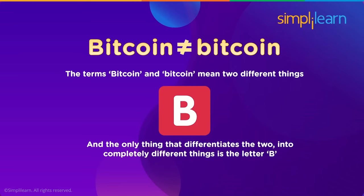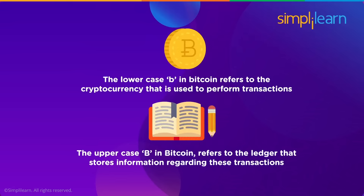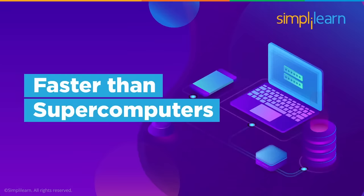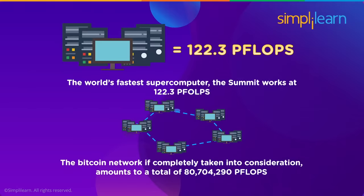The power of B: Bitcoin with an uppercase B and bitcoin with a lowercase b mean two different things. The lowercase 'b' in bitcoin refers to the cryptocurrency used to perform transactions. The uppercase 'B' in Bitcoin refers to the ledger that stores information about those transactions. Faster than supercomputers: the world's fastest supercomputer, Summit, works at 122.3 petaflops. The entire Bitcoin network's processing power is about 80,704,290 petaflops — though the network only adds blocks to the blockchain, unlike the supercomputer which can do many different things.